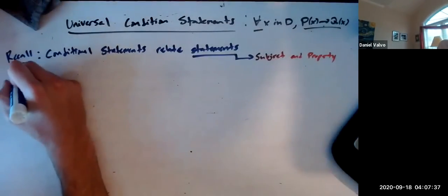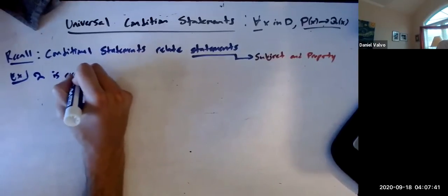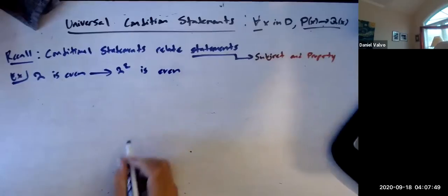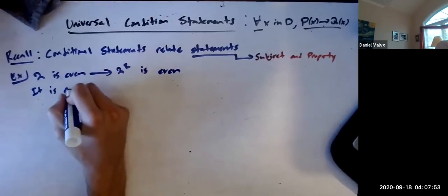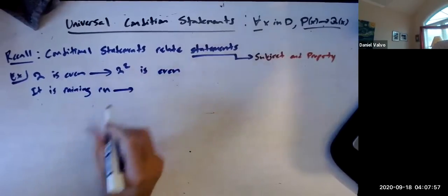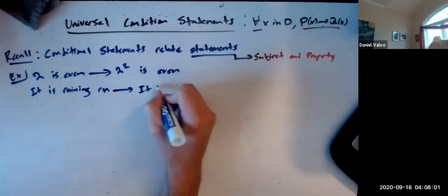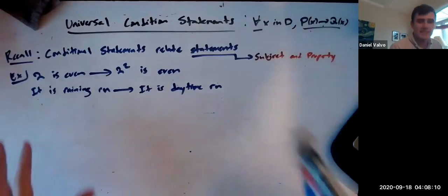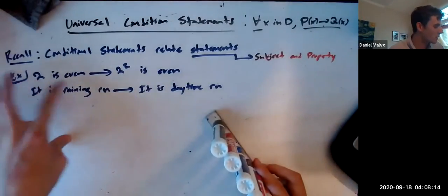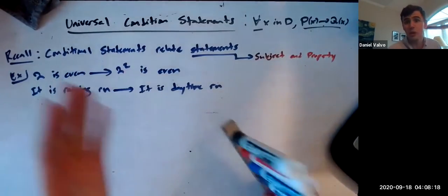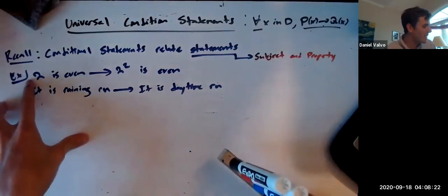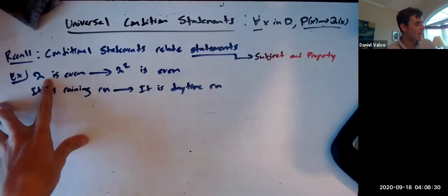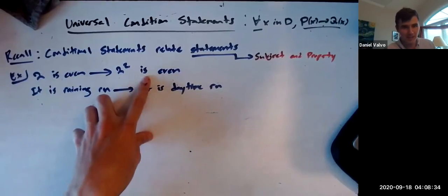But the problem is that then, so for example, a conditional statement would be that two is even implies two squared is even. Or something like, it is raining right now - I'll use RN for the kids - it is raining right now implies it is daytime right now. So these conditional statements relate statements. It's saying that if the hypothesis is true, the conclusion will follow. That's all it's saying, right?